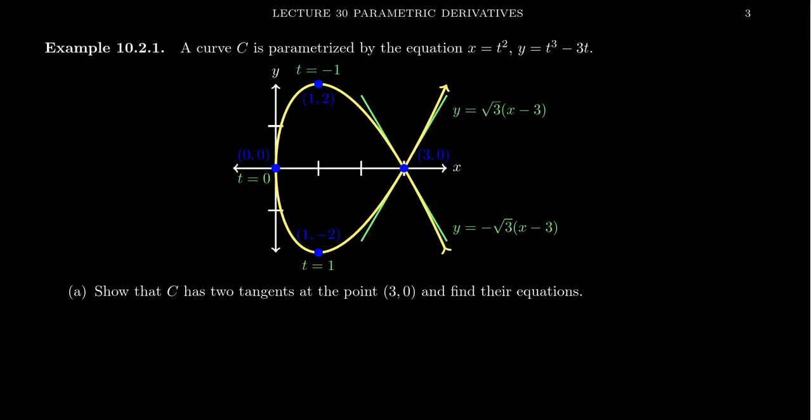Let me show you an example using these principles. We have a parametric curve C given by x equals t squared and y equals t cubed minus 3t. You can see an illustration of what this looks like with some examples: when t equals 0, you get the origin (0, 0); when t equals 1, you're at the point (1, negative 2); and when t equals the square root of 3, we'll come back to that one in a moment.